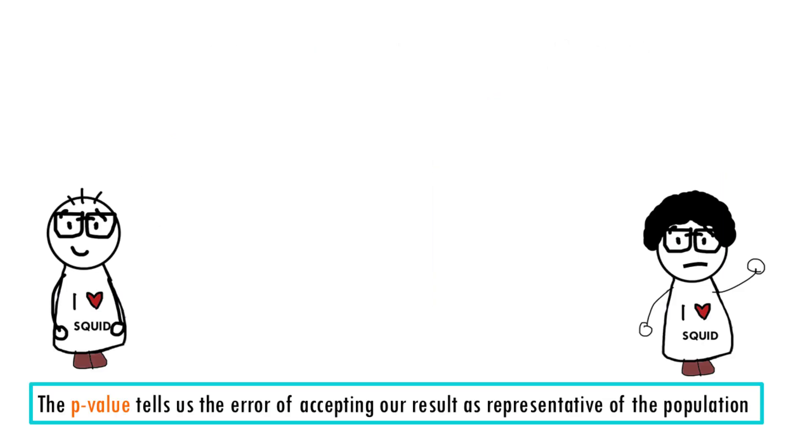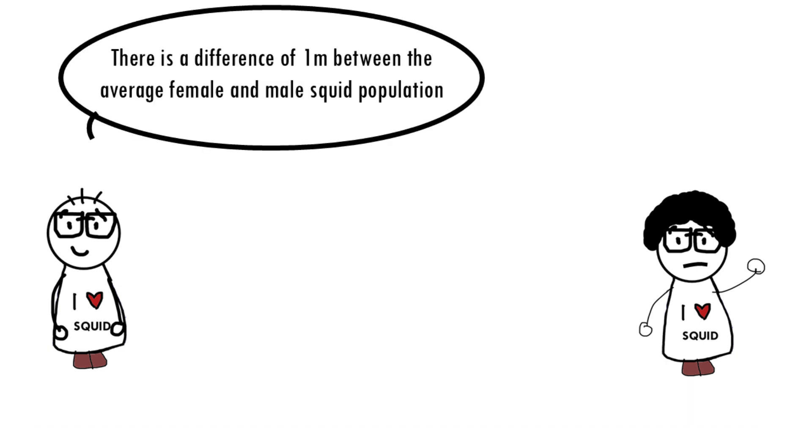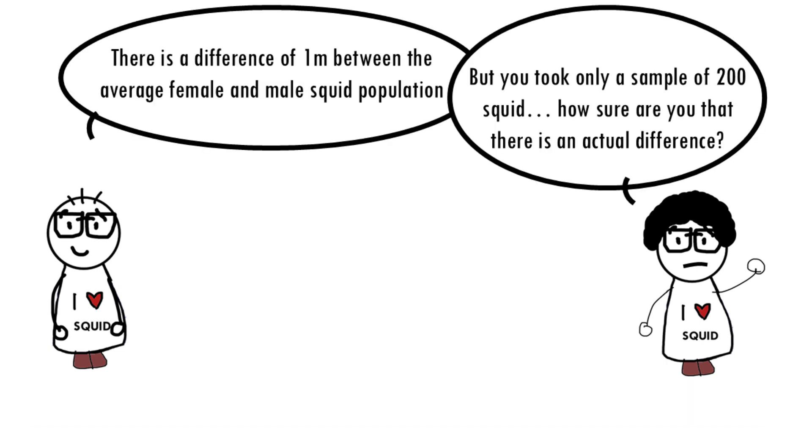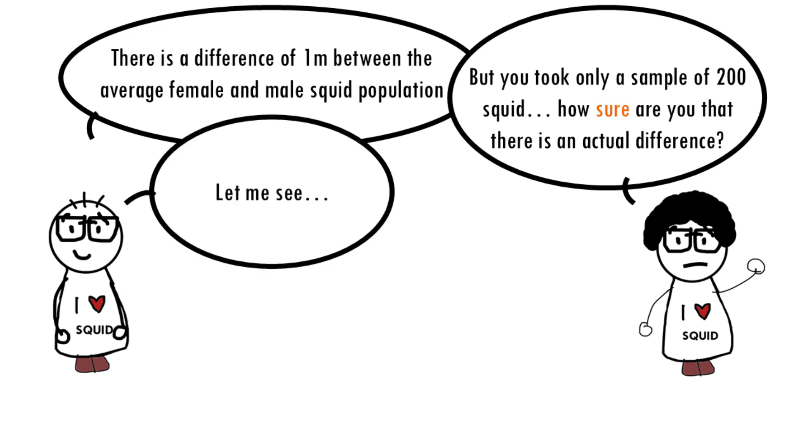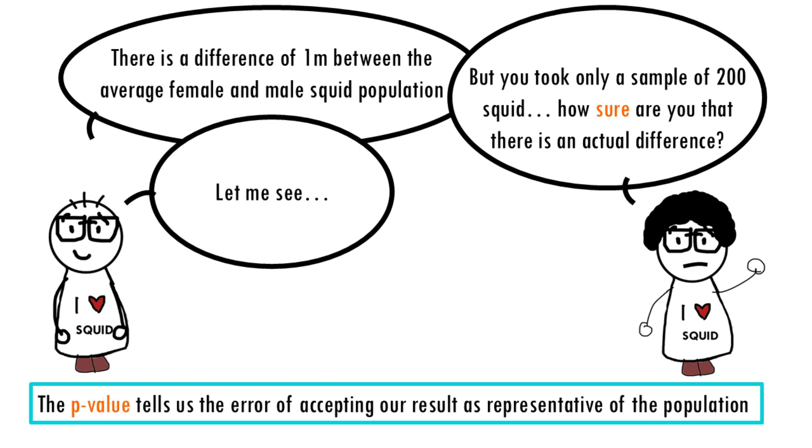We can also look at this from a different angle. The p-value represents the probability of error, the risk we are taking when accepting our observed result as valid or representative of the population.